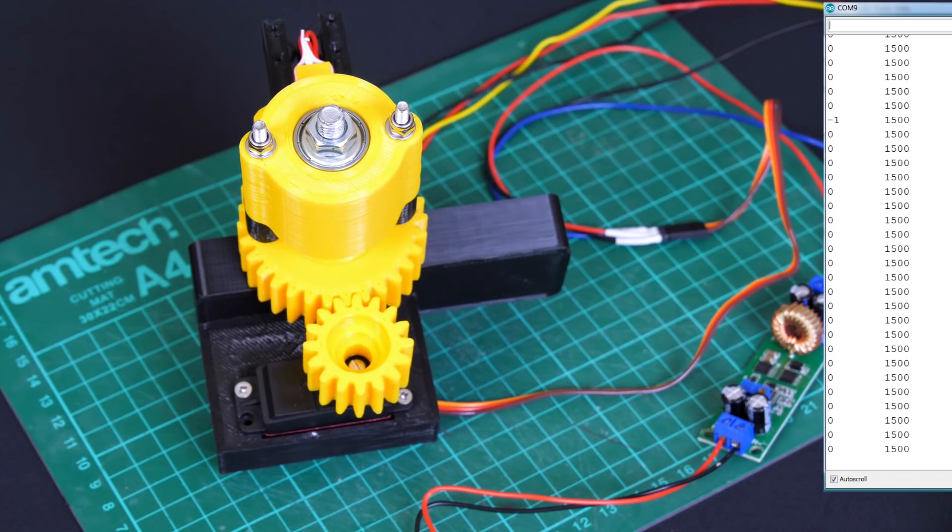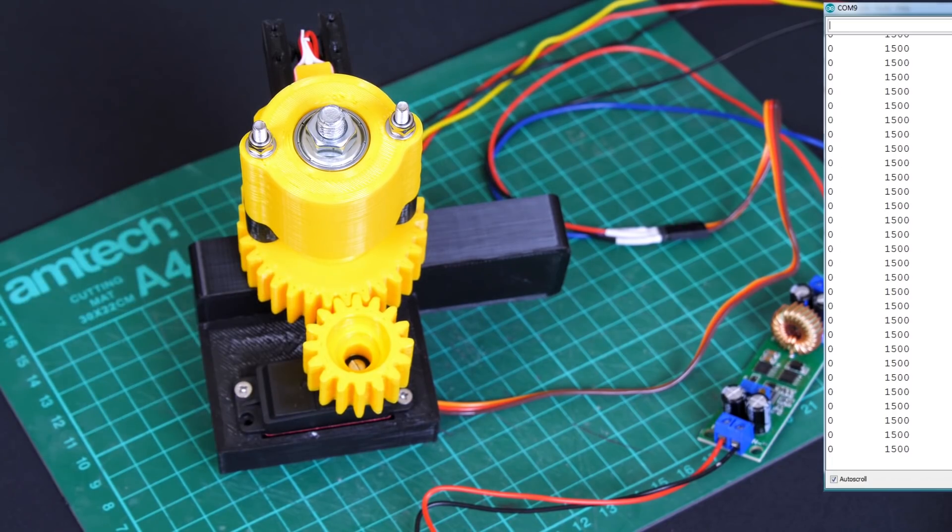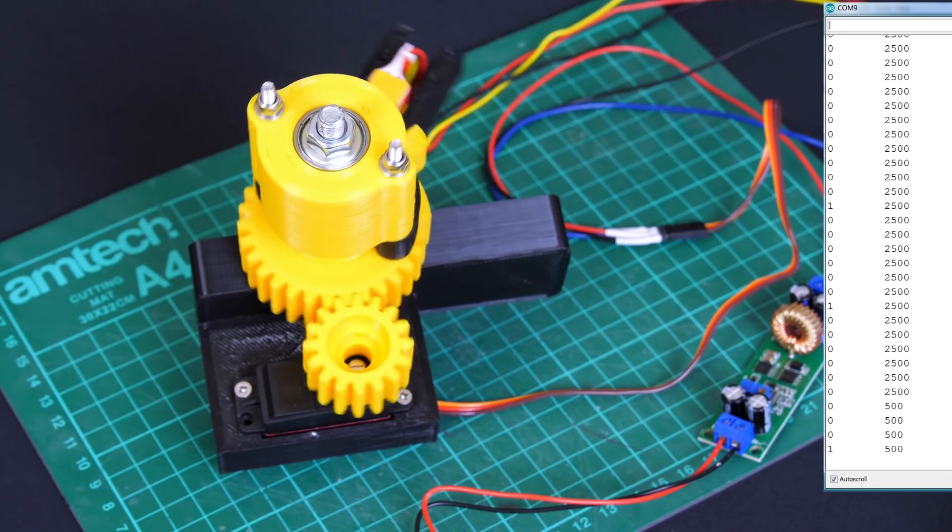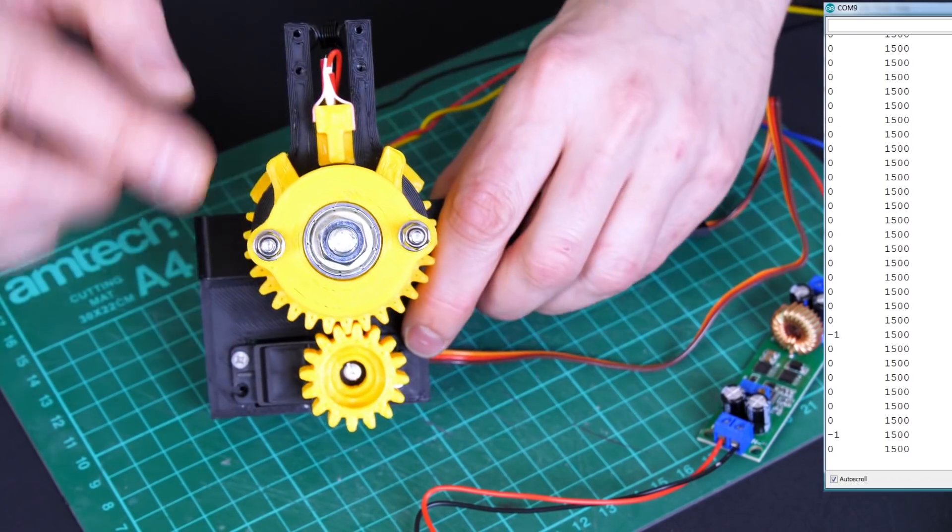I'm just going to manually move the servo so this moves it through several positions. You can see that value getting updated and these are the microsecond values for the PWM that drives the servo motor. It ranges from 500 up to 2500 and leaves it again in the middle at 1500.